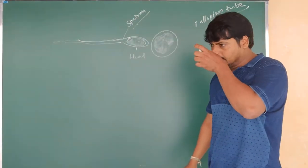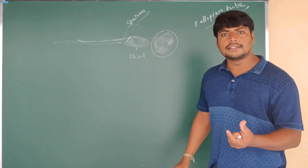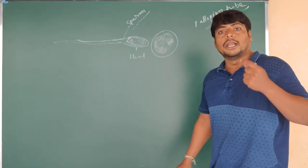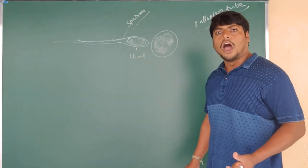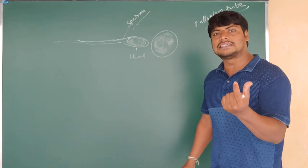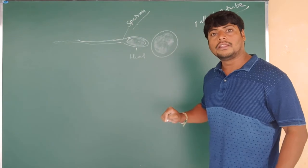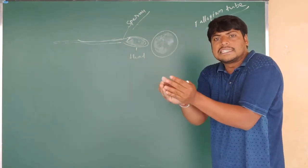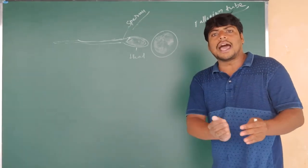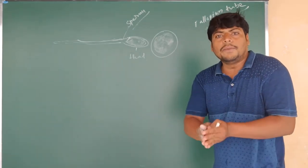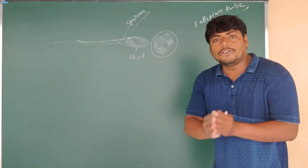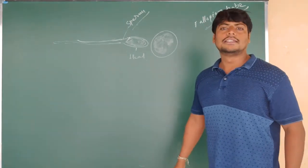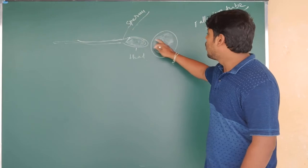During one ejaculation, the male organism deposits millions of sperm cells. Out of these millions, only one will reach the ovum. The remaining sperm are degraded due to the acidic condition found in the vagina, which kills most of them. Only a few thousand finally reach the fallopian tube, and out of those, only one fuses with the egg cell.